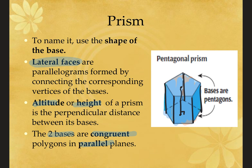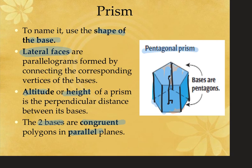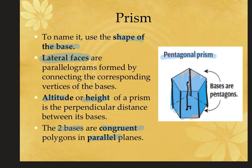When we name a prism, we use the shape of its base. So this one would be called a pentagonal prism. They could be triangular prisms, rectangular prisms, square prisms, hexagonal prisms — anything with two bases and rectangles or parallelograms connecting them.